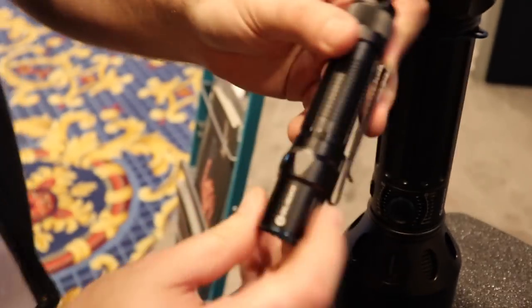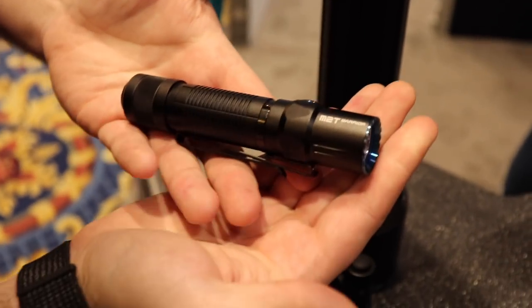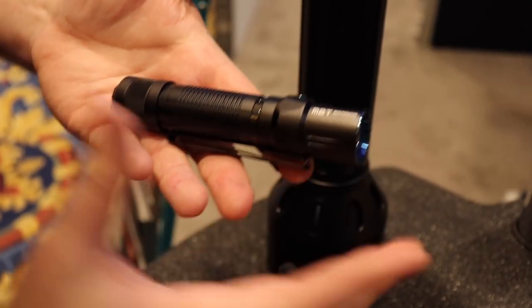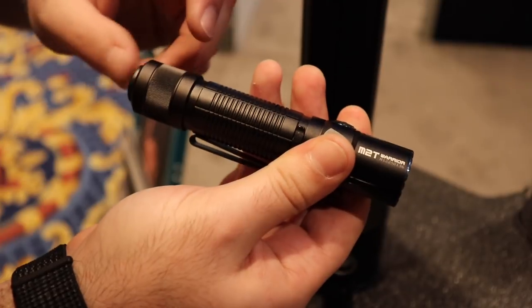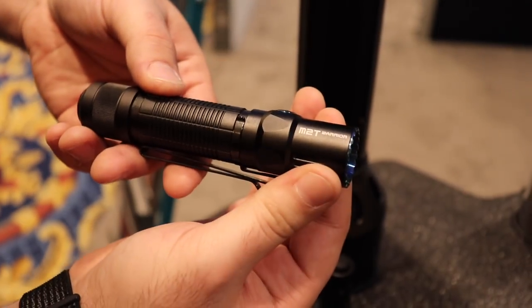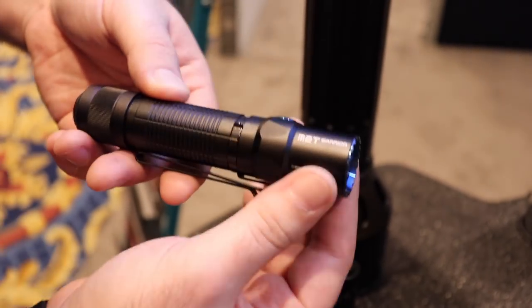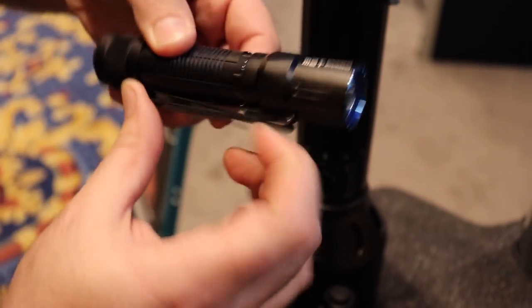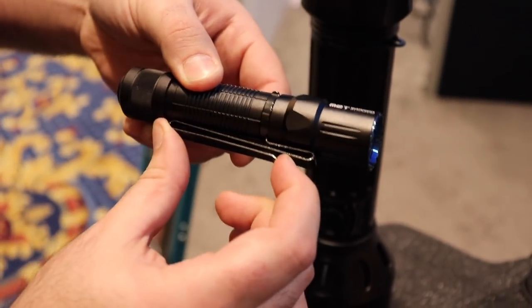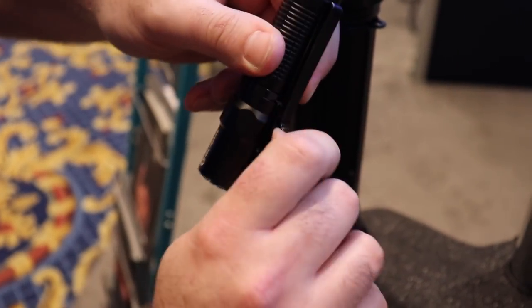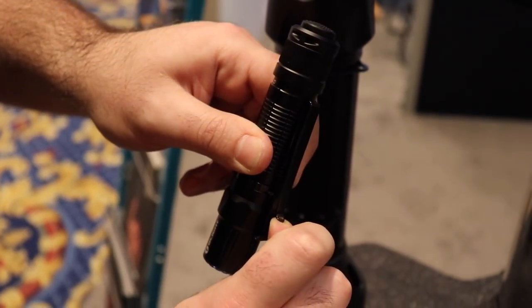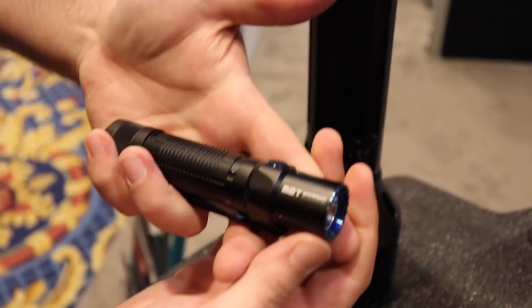The next one is the M2T. This looks similar to our M2R, but we made it a lot shorter. So this is, as far as we know, the shortest 18650 battery light with a tail switch on the market. It's got our dual direction clip, which is really nice if you want to clip it to something to use it, but also you can clip it in your pants with the bezel down. Now, this is 1200 lumens.